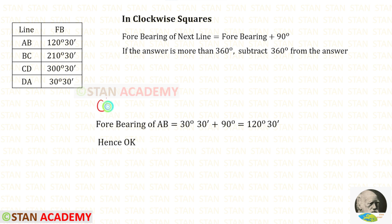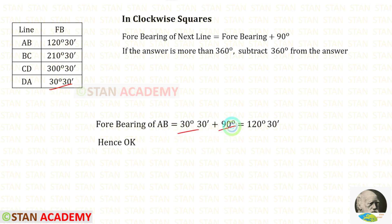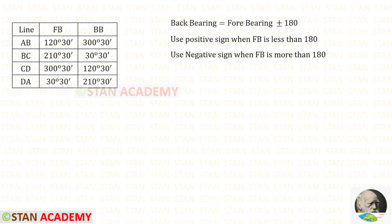Now let us apply a check. We know the fore bearing of AB already. Now using this angle, let us find it one more time: 30 degrees 30 minutes plus 90 degrees — we will get 120 degrees 30 minutes. We have got the same value, so the check is verified. We have found all of the fore bearings.